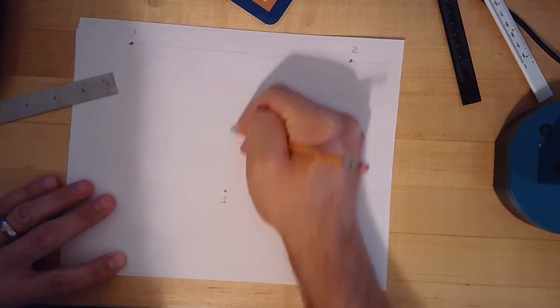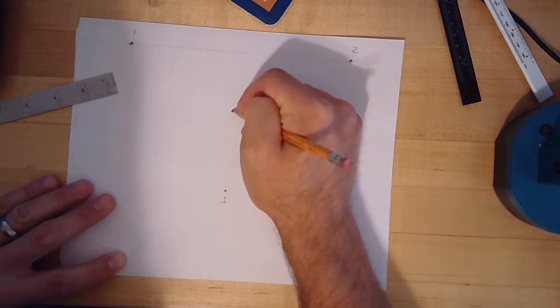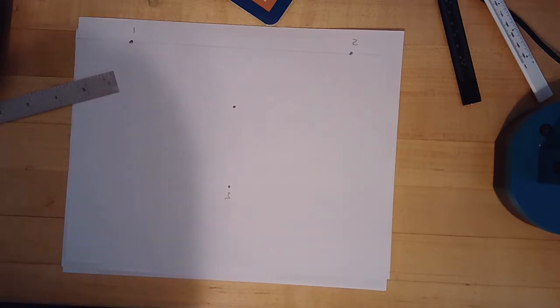So I'm going to come up here straight up from vanishing point three and put a dot. It doesn't have to be perfect. That's going to be the top corner of my box that I'm making, or my rectangular prism, if you will.